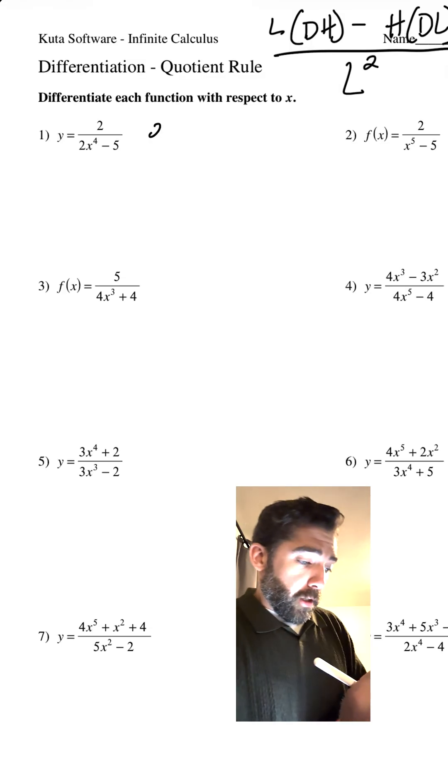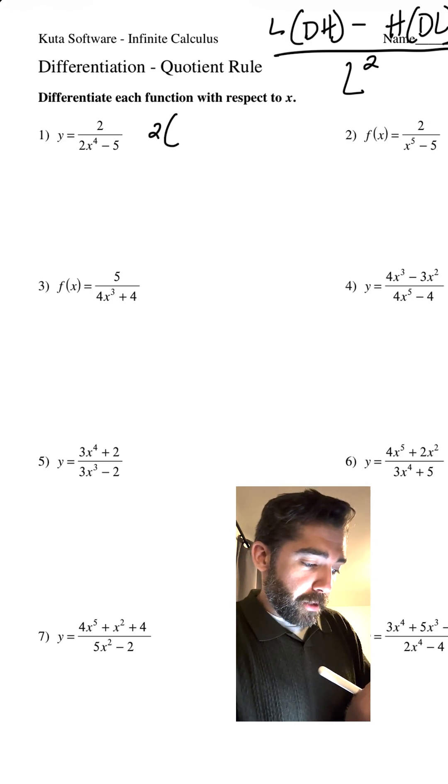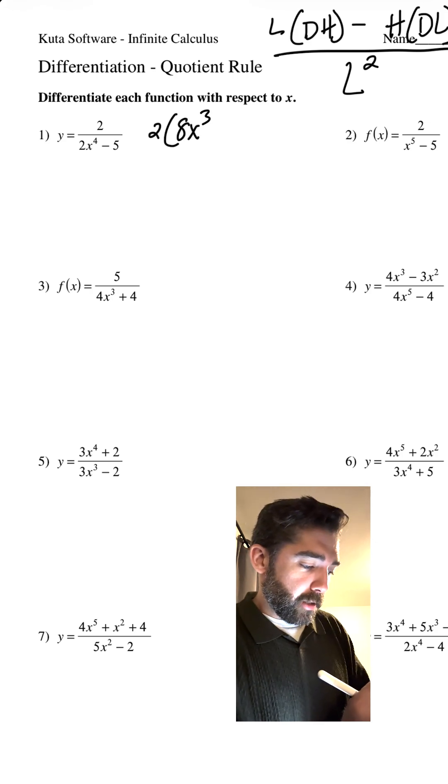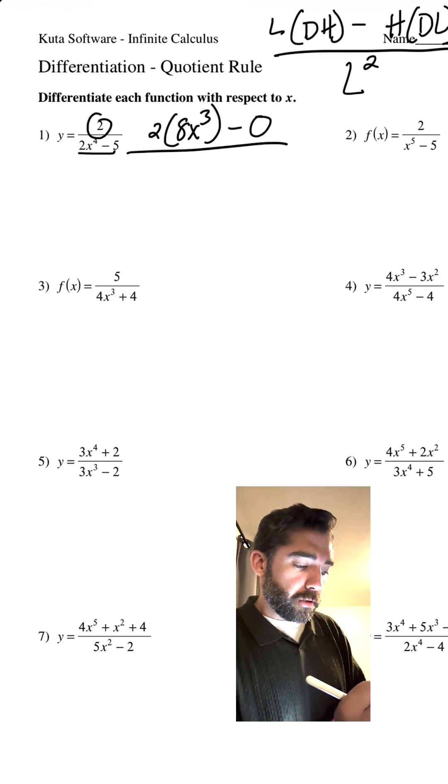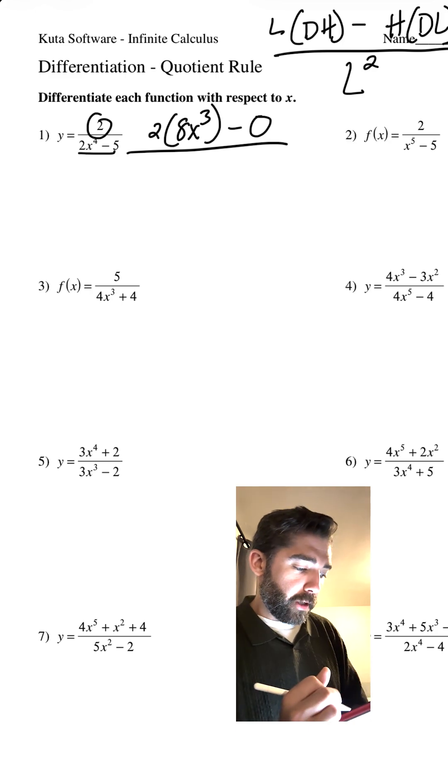Do number one. Low times the derivative of the high. Well, that is 8x cubed minus the high, which is this guy, but the derivative of the low is just zero, so minus zero. Great. Cool. There it is.